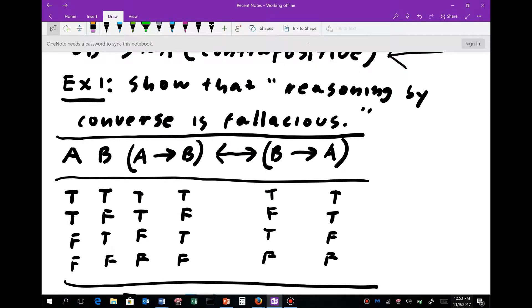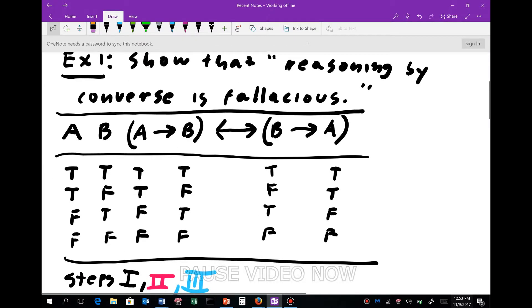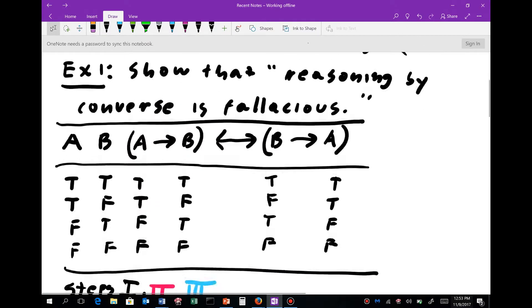So when we go through this truth table, we'd start off the same way as we started off before, looking at all the possibilities. And we have true true, true false, false true, false false. We copy them down, and we have this. So pause this video for a moment, get yourself to this step. And I'll do step two in red.